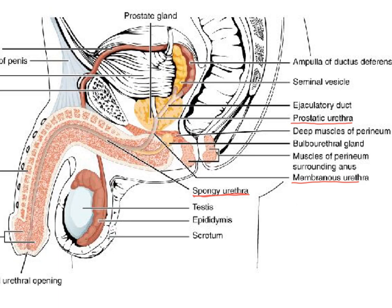Finally, we have the urethra within the penis, which is surrounded by erectile tissue called spongy tissue. We refer to this as the spongy urethra, but it's also often called the penile urethra. Those are the different regions of the urethra in the male.